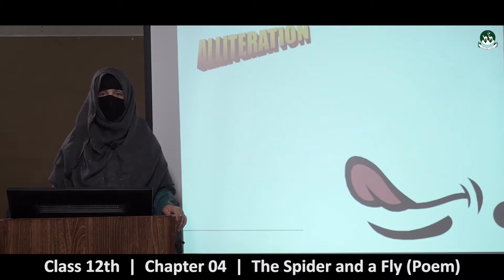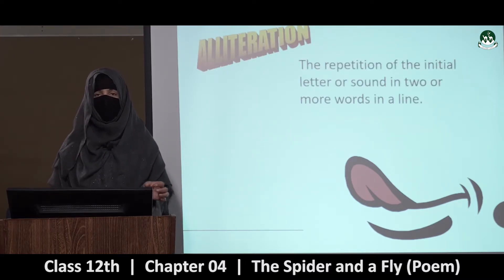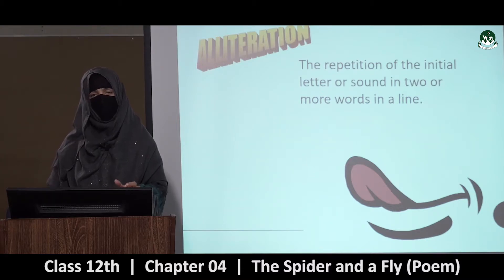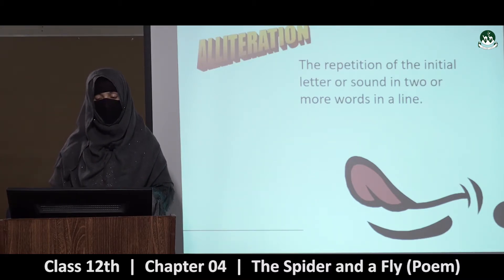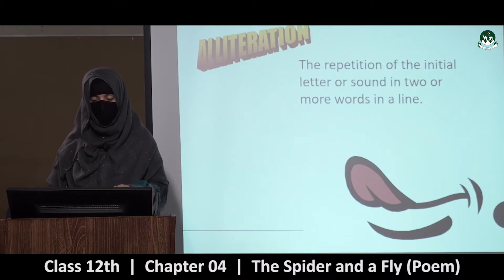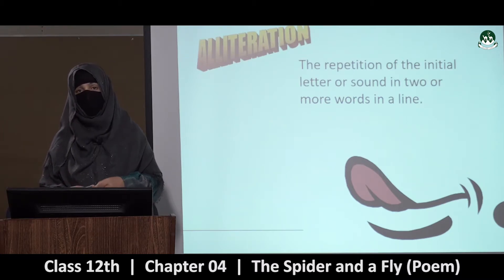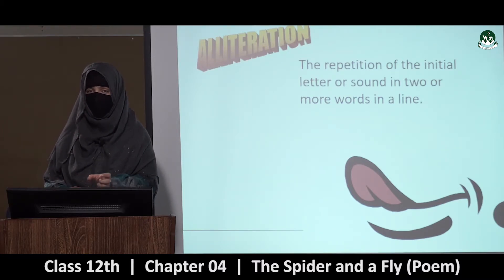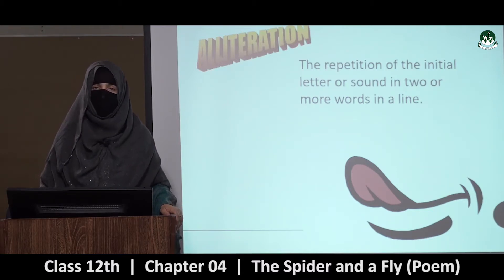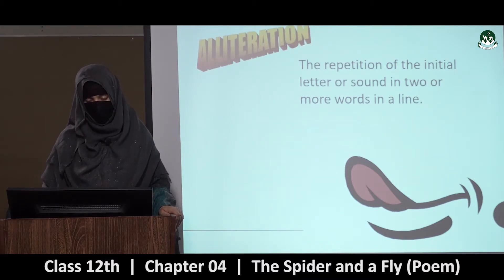Alliteration — alliteration kya hoti hai? The repetition of the initial letters or sound in two or more words in a line. Ek line mein do ya do se zyada aise words use kiye jayein jinka initial sound ek jaisa ho. Aapko 'Spider and the Fly' mein bhi is tarah ki alliteration milegi — aap yeh poem padheinge aur phir dubara se baith ke us poem ko padhna hai aur find out karna hai.